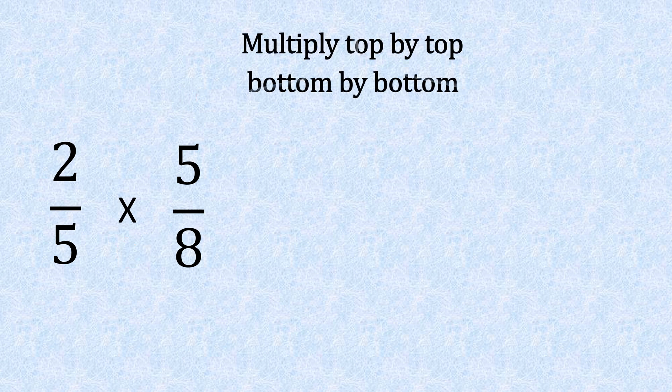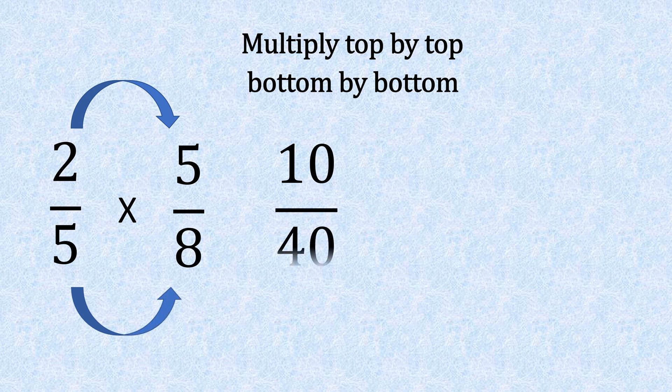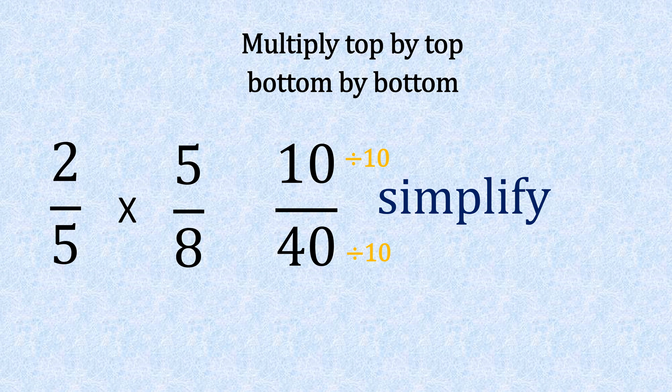Let's have a go at one then. We've got 2/5 divided by 8/5, so KFC. Let's flip that, giving us 5/8. Change that, giving us a multiplication sign. So top by top, bottom by bottom: 2 times 5 is 10, and 5 times 8 is 40. Now we can see that's easily simplified—they're both divisible by 10. 10 into 10 goes 1, 10 into 40 goes 4. The answer: 1/4.